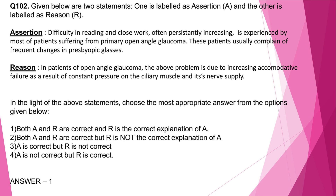Question number 102: Assertion — difficulty in reading and close work, often persistently increasing, is experienced by most patients suffering from primary open angle glaucoma; these patients usually complain of frequent changes in presbyopic glasses. Reason — this is due to increasing accommodative failure as a result of constant pressure on the ciliary muscle and its nerve supply. Both assertion and reason are correct and reason is the correct explanation. Presbyopia is an accommodative failure; accommodation requires contraction of ciliary muscles, which is affected due to increased intraocular pressure in patients of open angle glaucoma.